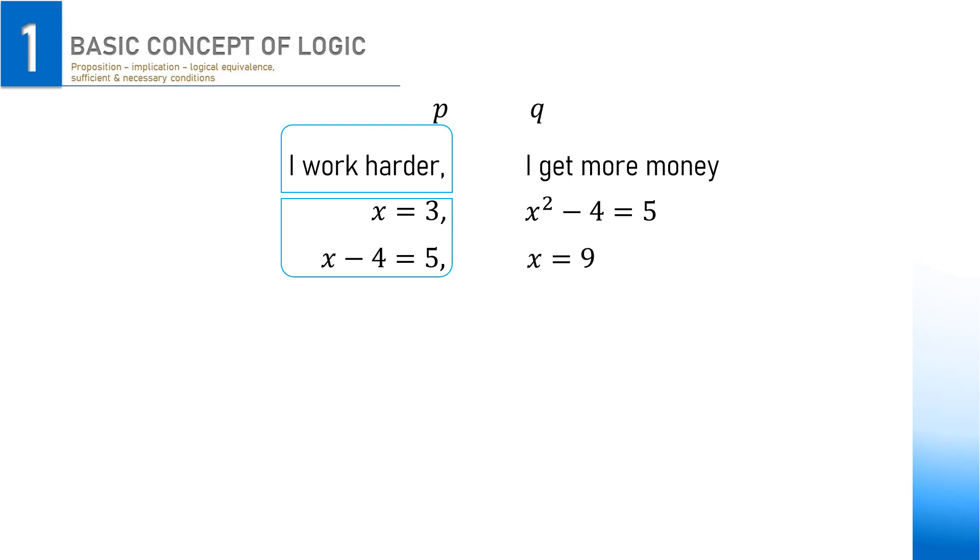Now, we are going to talk about two logical reasonings, namely implications and equivalence. Implication is a condition in which P and Q are two propositions such that whenever P is true, then Q is necessarily true. It is symbolized like this, P, implication arrow, and Q. This is read as P implies Q or if P, then Q.